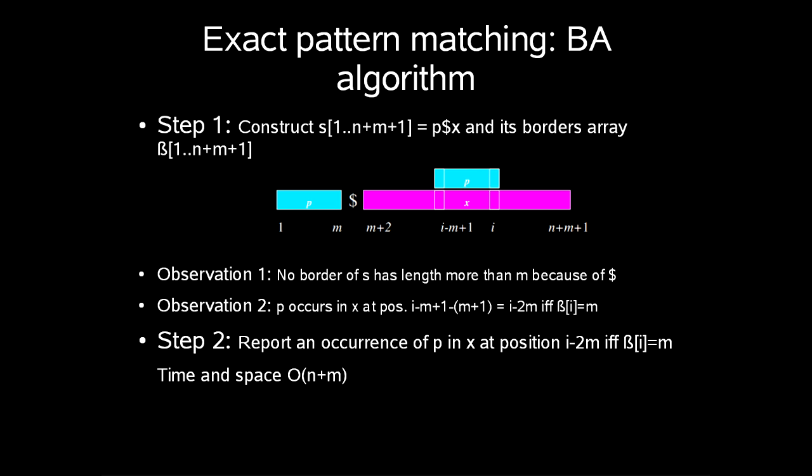So for exact pattern matching, let's call this algorithm the BA algorithm. Step 1 is to construct s1 up to n plus m plus 1, like p dollar x, and its borders array beta 1 up to n plus m plus 1. We roughly get the illustration below. The first observation is that no border of s has length more than m because of the special character dollar. Next, p occurs in x at position i minus m plus 1 minus m plus 1 equals i minus 2m if and only if beta i equals m.